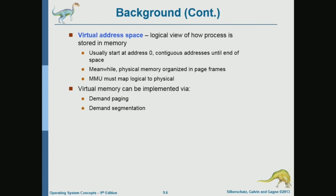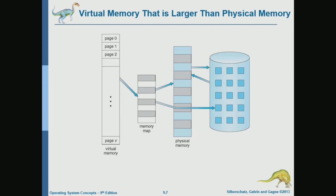The picture is: the logical or virtual address space of a program has pages from zero through V. The memory map — the page table — maps virtual memory into physical memory. In physical memory, we have a subset of the pages, but all pages are on disk. All pages are on disk; a subset are in physical memory; and a page table maps virtual to physical.